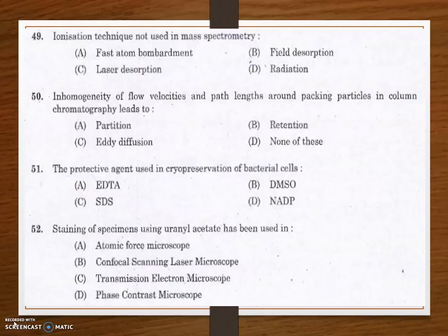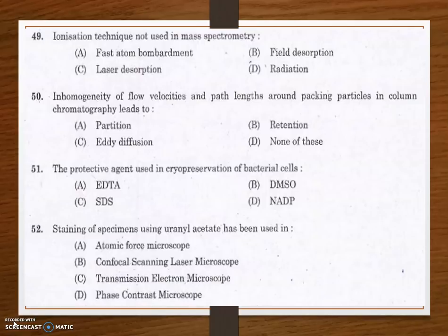Next question: the protective agent used in cryopreservation of bacterial cells. Options are EDTA, DMSO, SDS, and NADP. The answer is DMSO (dimethyl sulfoxide). Cryopreservation is a process that preserves organelles, cells, tissues, or biological constructs by cooling the sample to very low temperatures, usually minus 196 degrees Celsius, using DMSO as the protective agent.